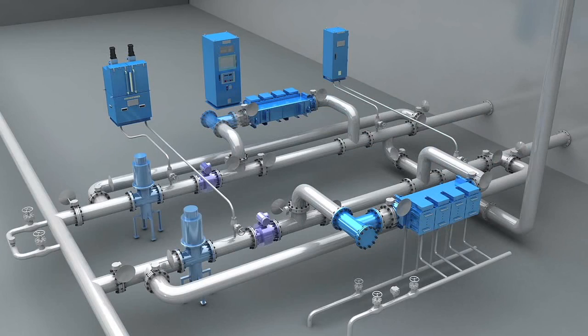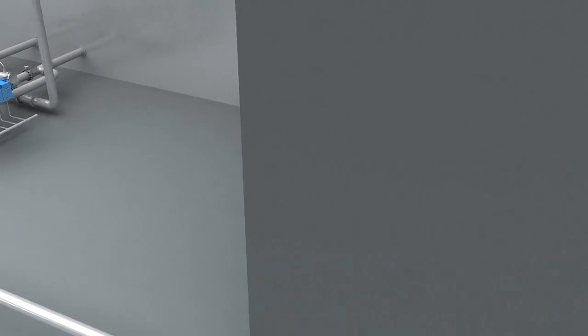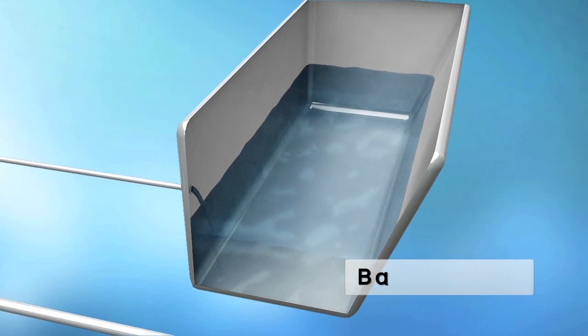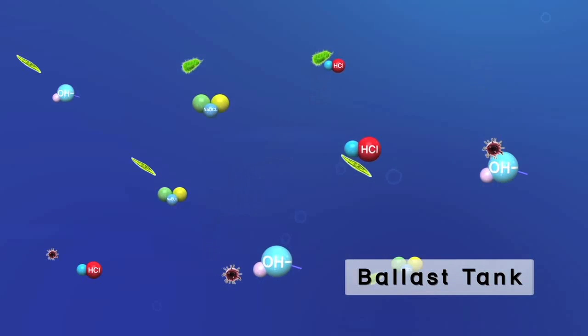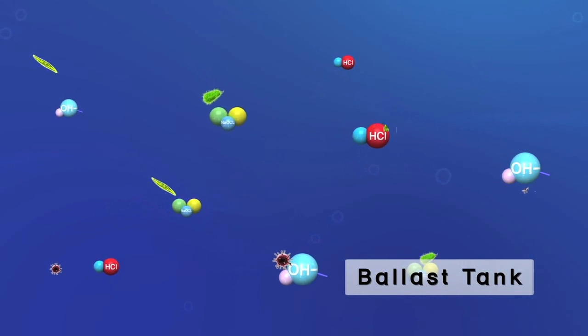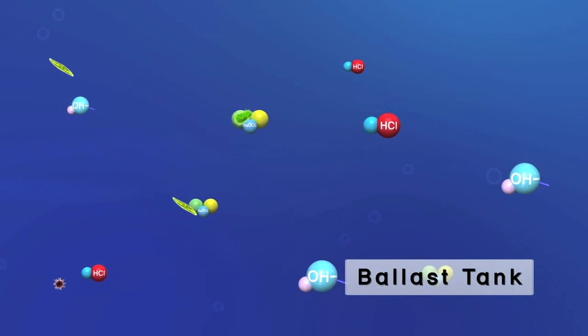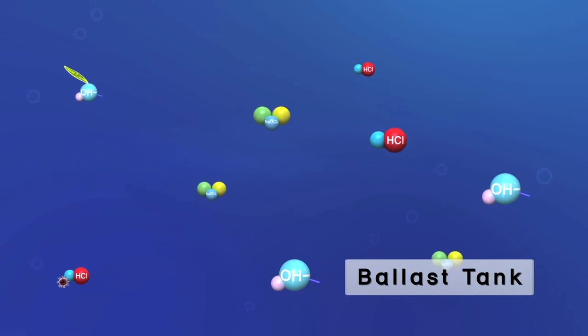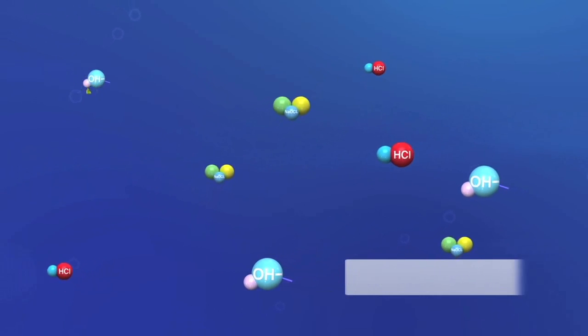After treatment, the treated ballast water is stored in the ballast tank during the voyage. During this period, TRO, the residual hypochlorate, remains active in the ballast tank, preventing any regrowth of microorganisms for up to 30 days after treatment.